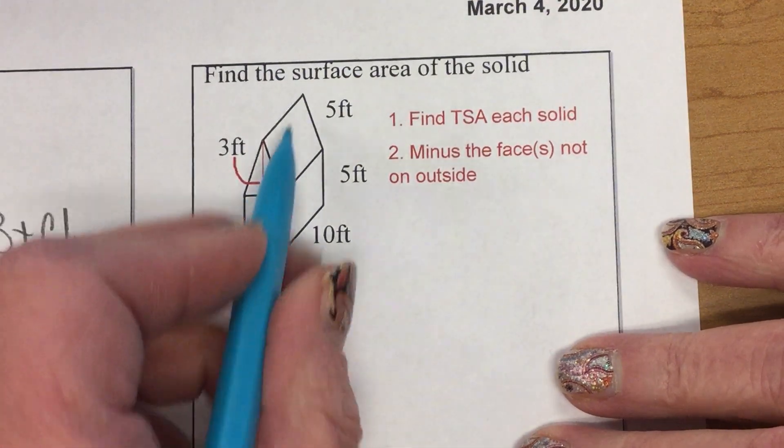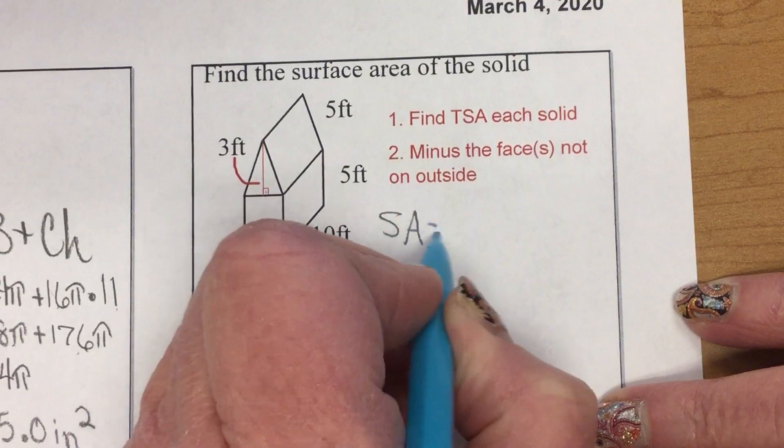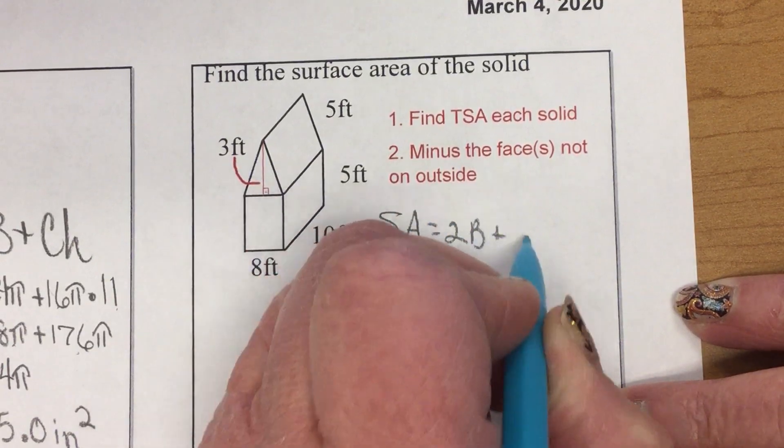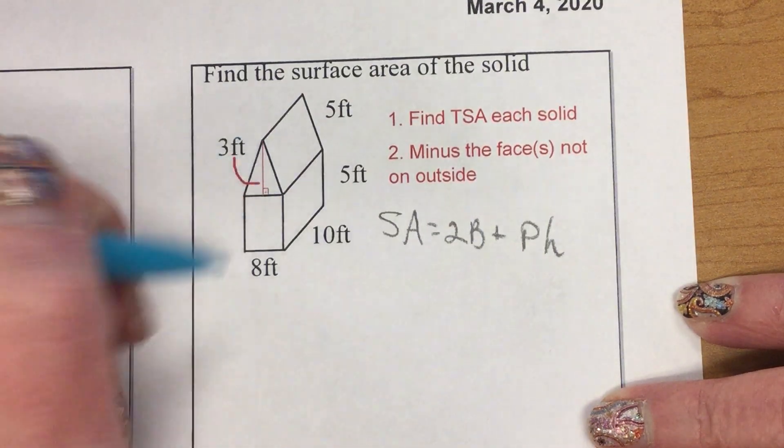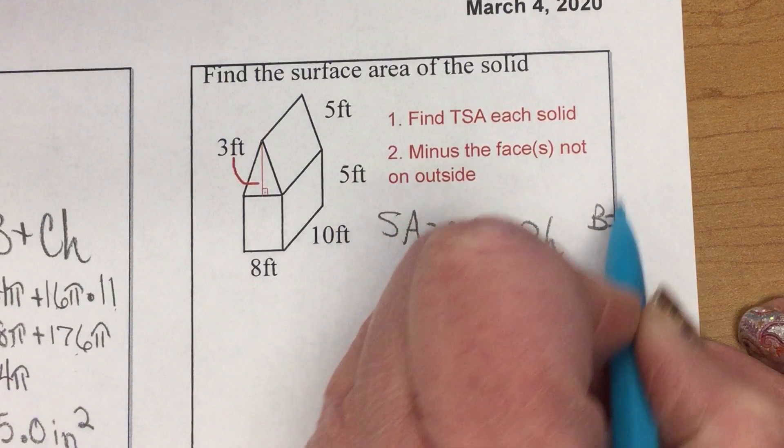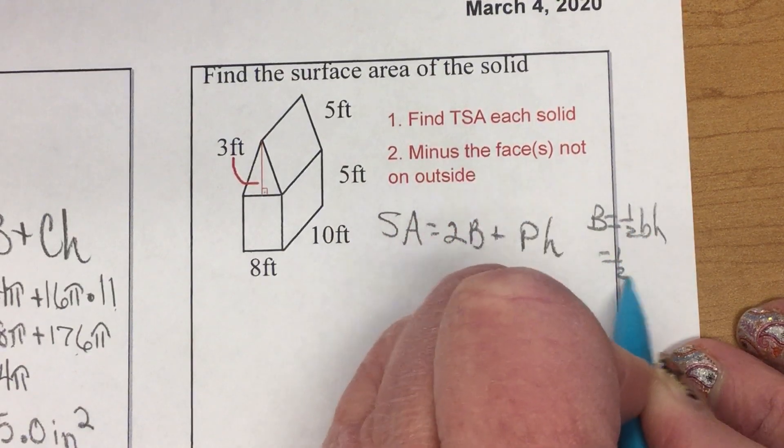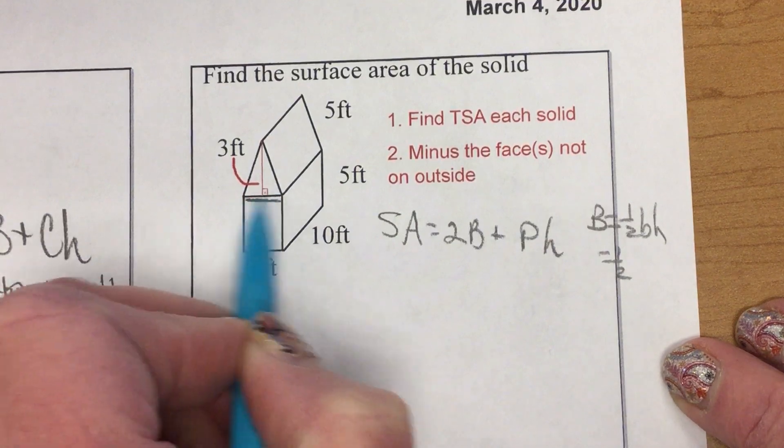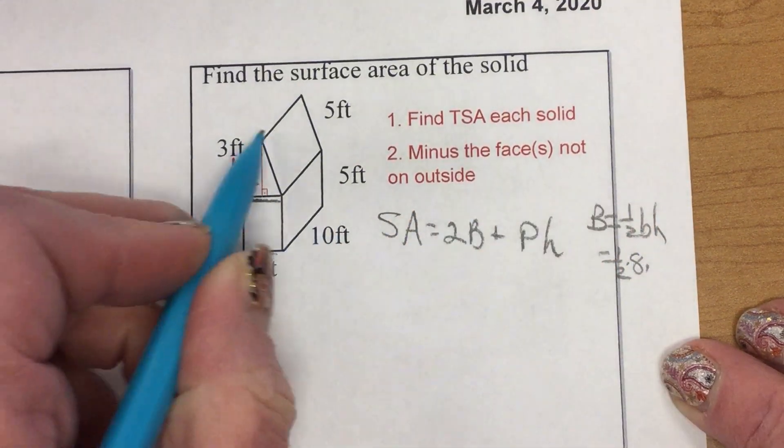So, starting with the top of my house, 2 capital B plus PH. My base is a triangle, one-half BH, little b.